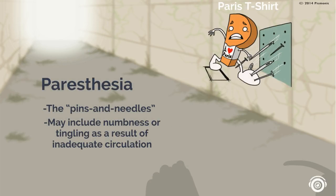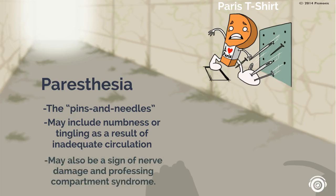Paresthesia is often the first sign of an impending problem, described as the pins and needles sensation that may include numbness or tingling as a result of inadequate circulation. It may also be a sign of nerve damage and progressing compartment syndrome. Paresthesia is represented by the Paris t-shirt for pins and needles.